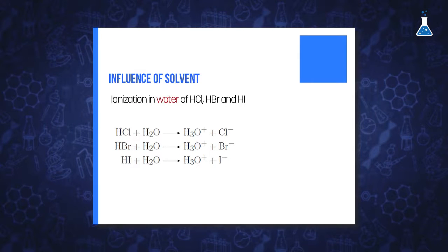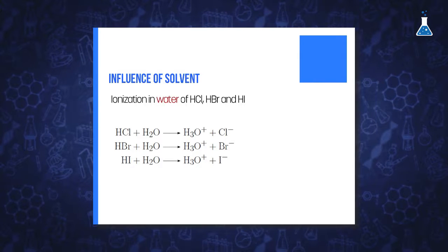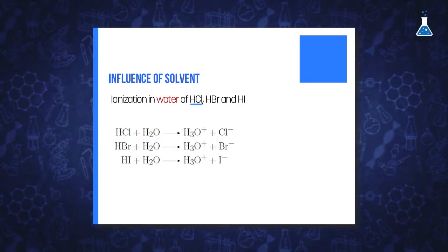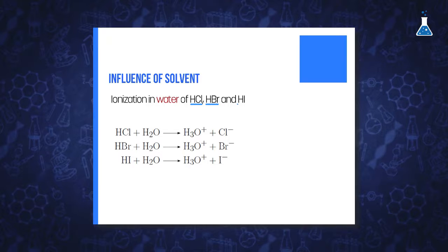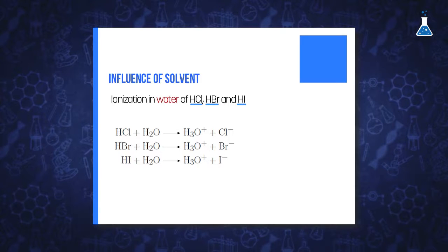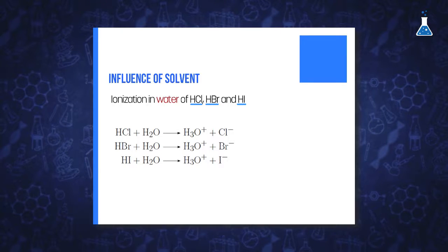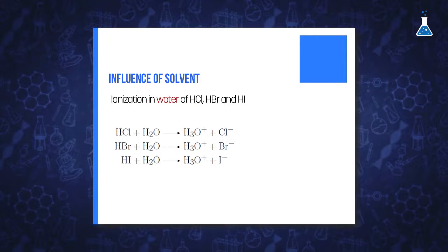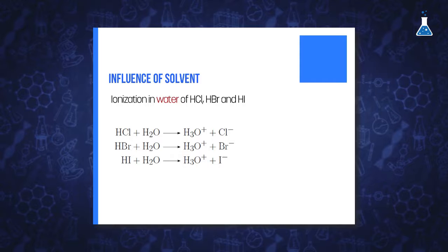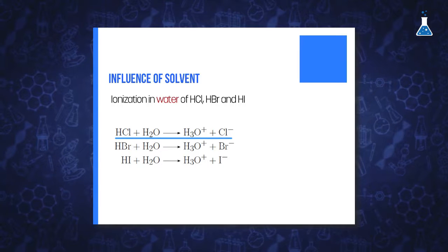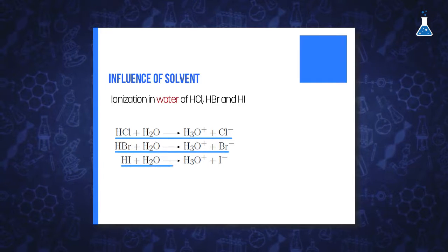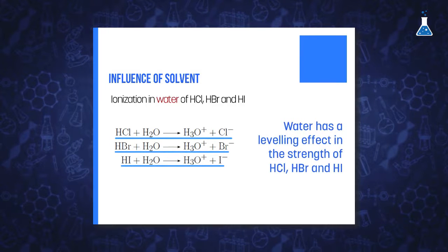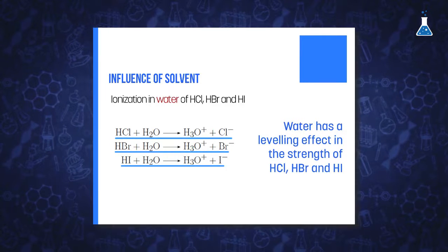We can investigate the influence of a solvent on the acidity strength of three acids — hydrochloric acid, hydrobromic acid, and hydroiodic acid — by evaluating each ionization in water and acetic acid. In water, the three of them are fully ionized and hence appear to be almost equally strong. For that reason, water is said to have a leveling effect on the strength of these acids.